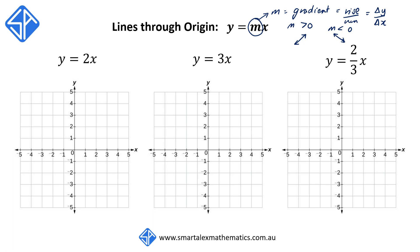So if we know that these lines go through the origin, and we have information about the gradient, then we have enough information to draw the line. Our first example is y is equal to 2x. The line goes through the origin — that gives us the first point. Using the fact that the gradient m is 2, we can write this as plus 2 over plus 1, so Δy over Δx equals plus 2 over plus 1.